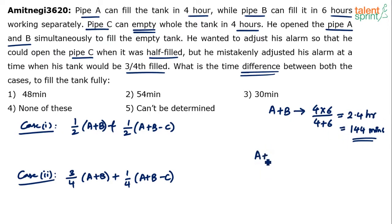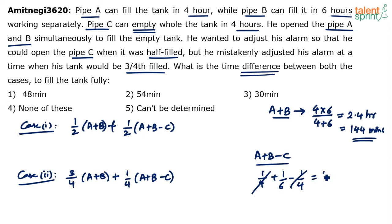When all A, B, and C work together — using a negative sign for C since it does negative work — we use the unitary method. A's capacity is 1/4, B's capacity is 1/6, and C's capacity is −1/4. The overall capacity is 1/4 + 1/6 − 1/4 = 1/6, which means the time required is 6 hours, or 360 minutes. So when A and B work together they fill the tank in 144 minutes, but when all A, B, and C work together they take 6 hours.